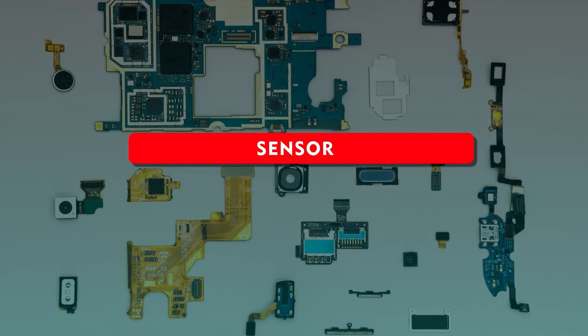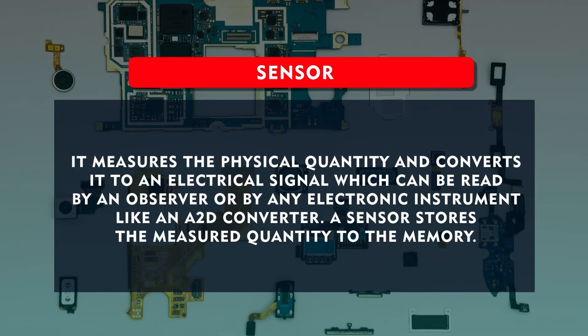The first component is the sensor — it is the main essential part where it senses the parameters. It measures the physical quantity and converts it into an electrical signal which can be read by an observer or by an electronic instrument like an analog-to-digital converter. Whatever physical quantity signals the sensor receives, it converts them into electrical signals. The sensor continuously stores these measured quantities to the memory.